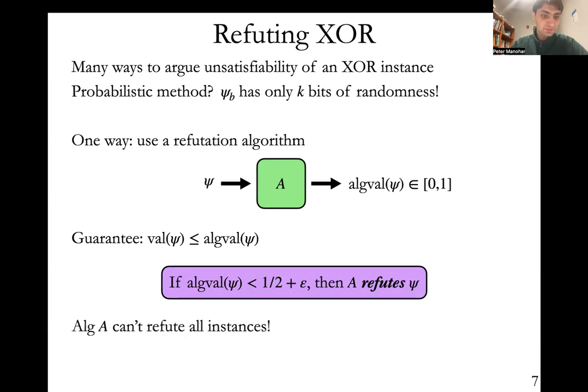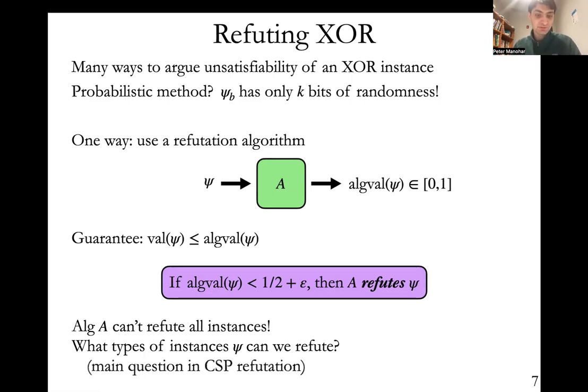If we're looking for efficient algorithms, we probably shouldn't hope that our algorithm A will refute all instances, but we can ask what types of instances can we refute? And hopefully these LDC XOR instances will be a class of instances that we actually can refute, and then we'll be able to get lower bounds. Figuring out what types of instances we can refute with an efficient algorithm is kind of the main question in CSP refutation.